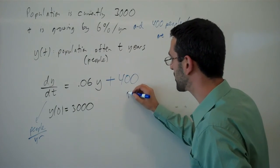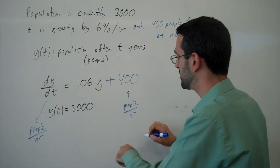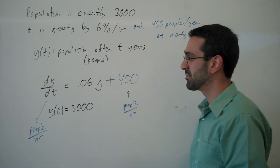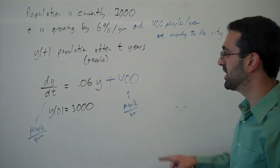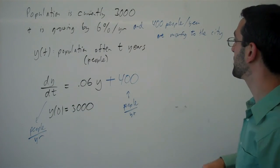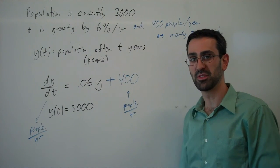It is increasing by 400 people per year. Notice that this already has the correct units of people per year, so we do not need to multiply this by t or anything like that. This is already people per year. And so in the differential equation, we can very simply take into account this additional information. That's one of the powers of differential equations.